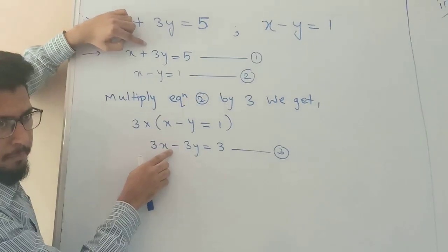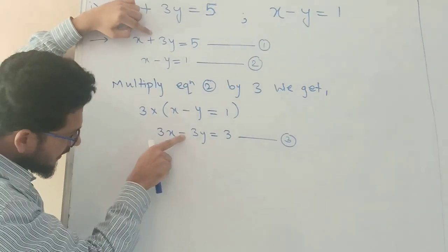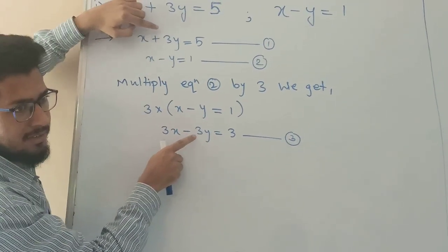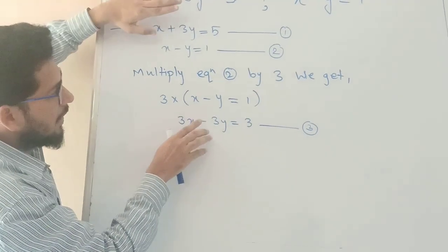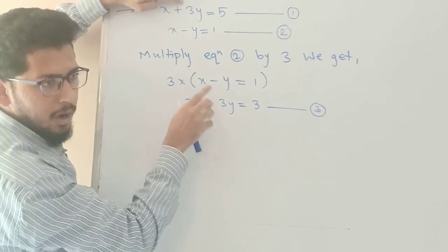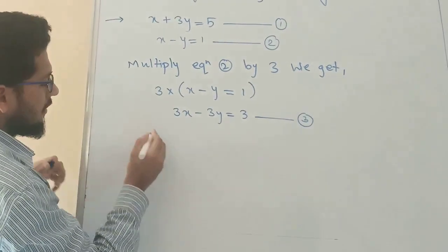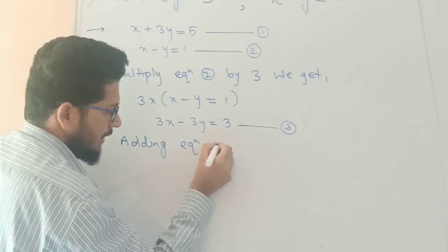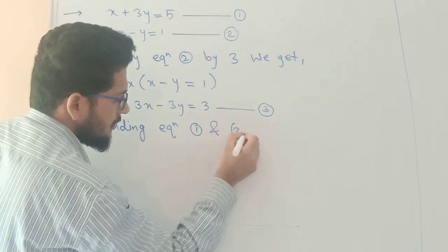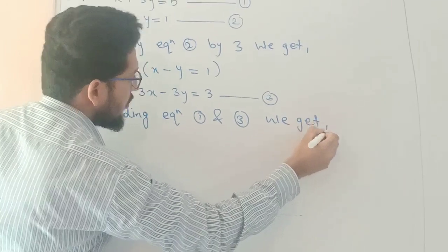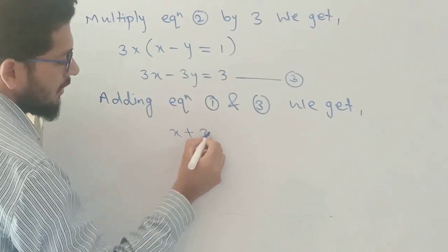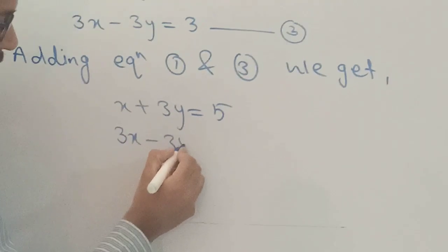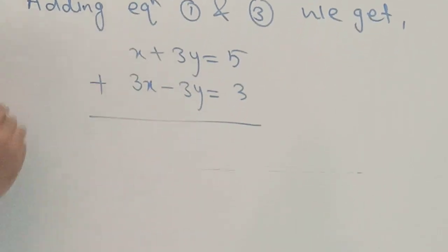Since the signs are opposite, we add equation 1 and equation 3. Equation 1 is x plus 3y equals to 5, and equation 3 is 3x minus 3y equals to 3. We proceed to add these two equations.